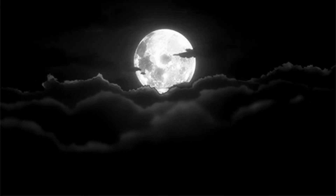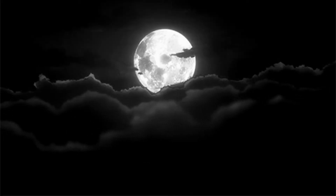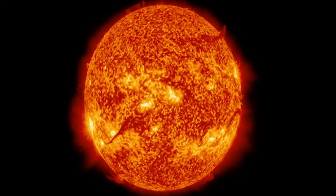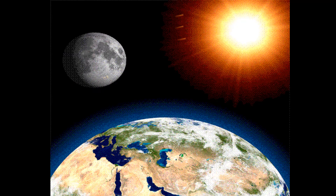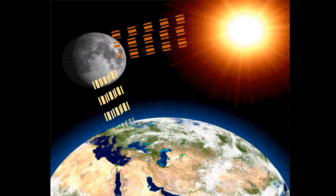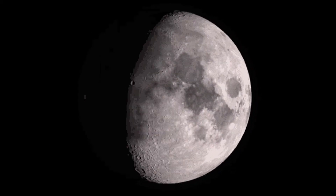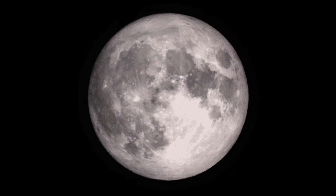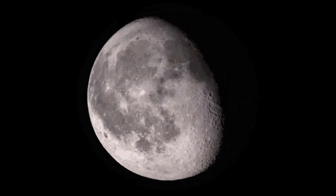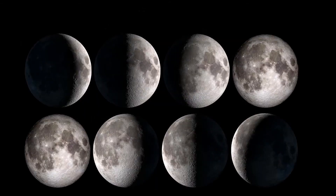The Moon itself doesn't emit any light like the Sun. The Moon reflects the sunlight that falls on it. When we look from the Earth, the shape of the Moon changes every night for one month. The different shapes of the light portion of the Moon that are seen from Earth are known as Phases of the Moon.